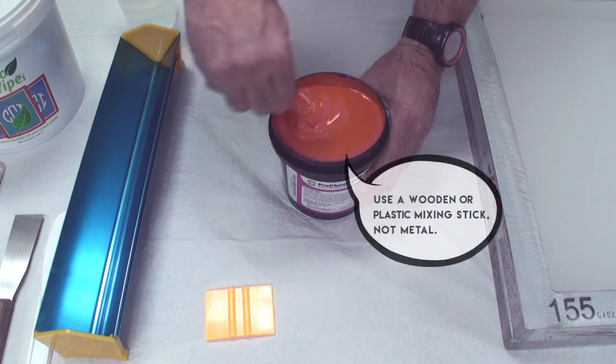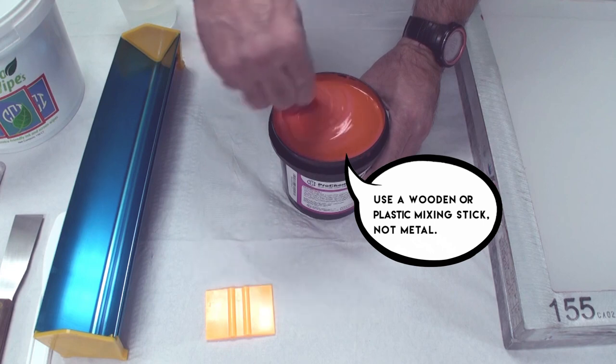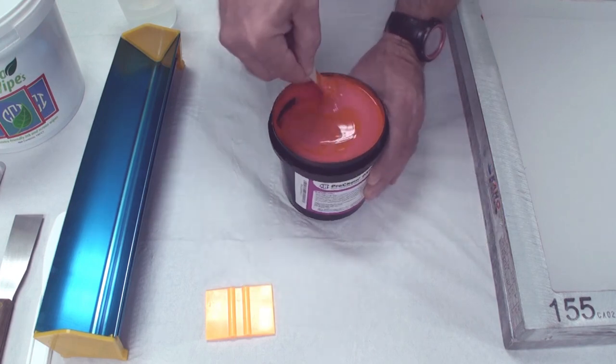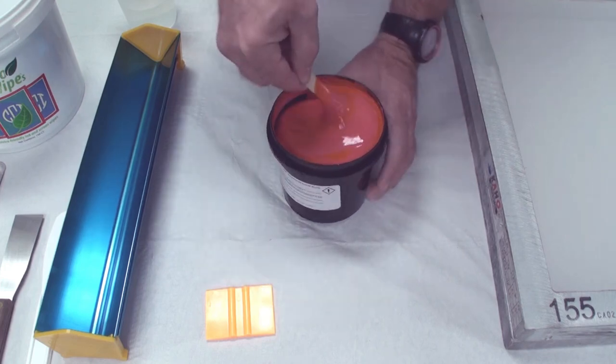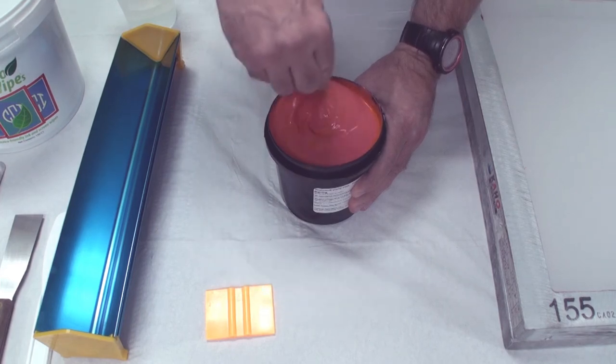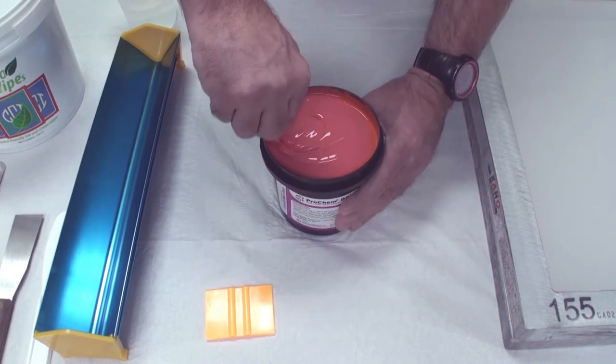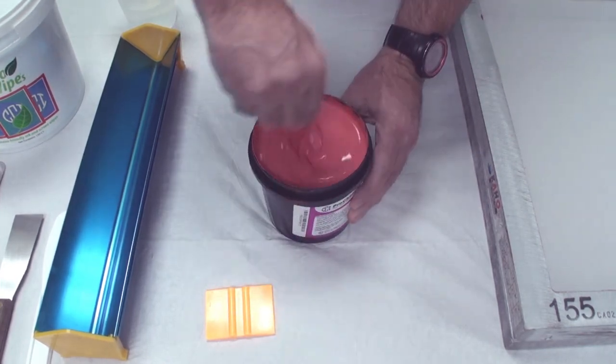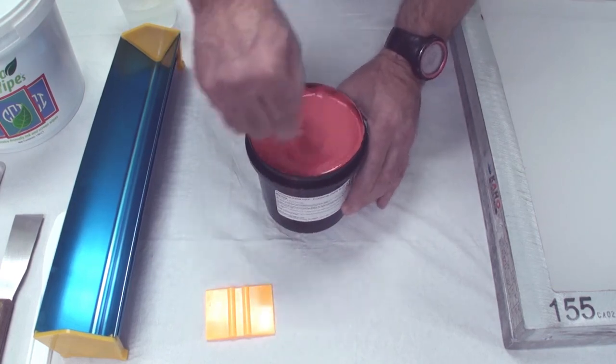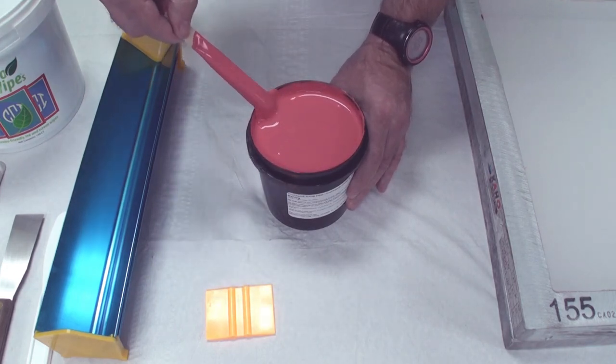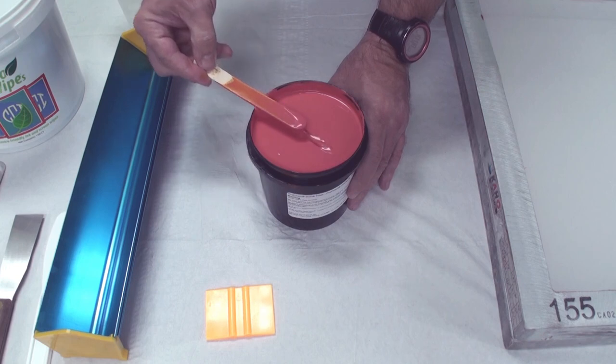Always use a soft stir stick whether wood or plastic, never metal. And again you want to get that kind of pinkish color, not the bright orange from the diazo. So you want to keep stirring it until you get it thoroughly dispersed. And there you have a emulsion that is thoroughly dispersed and mixed.